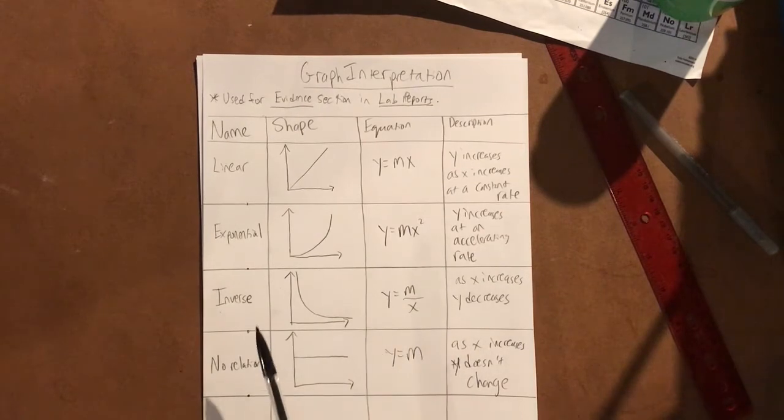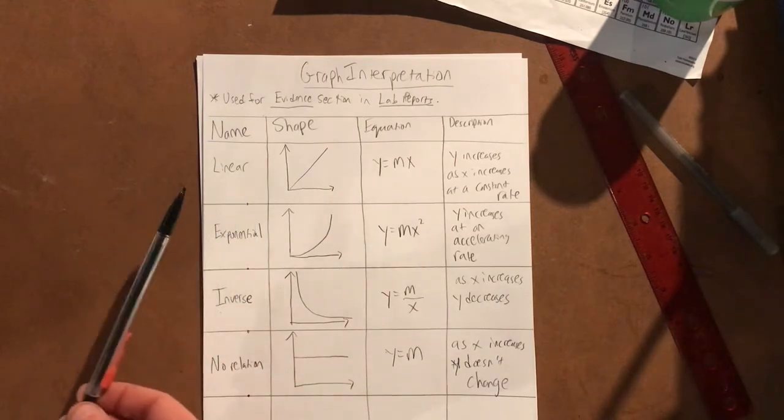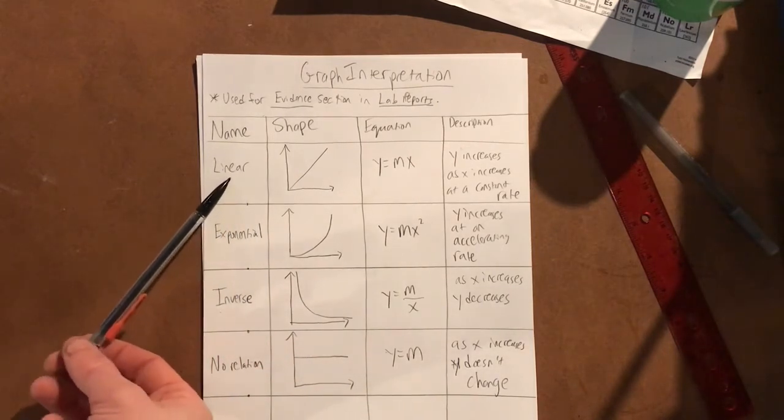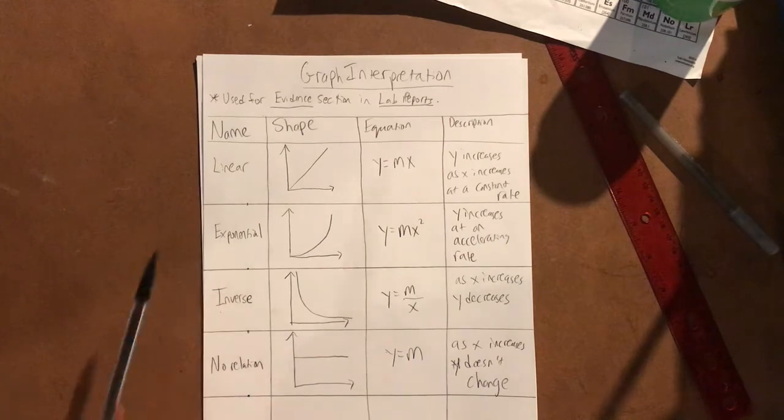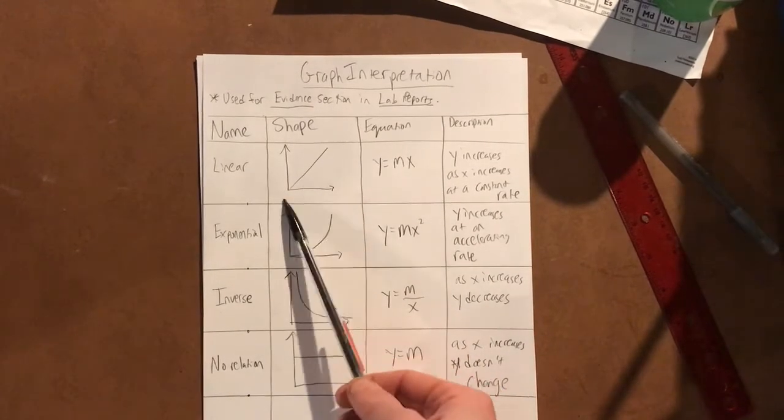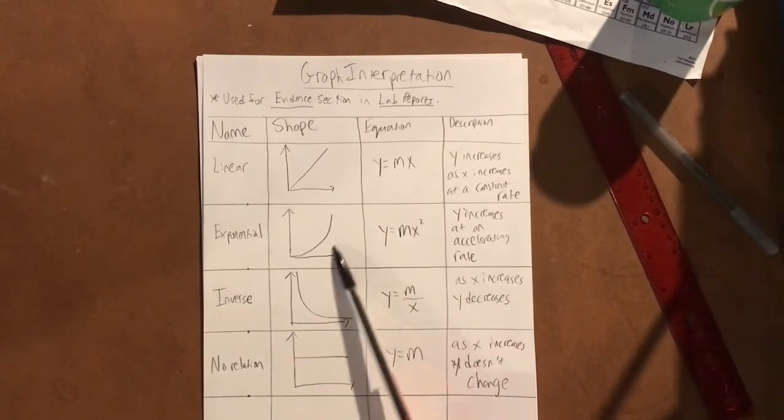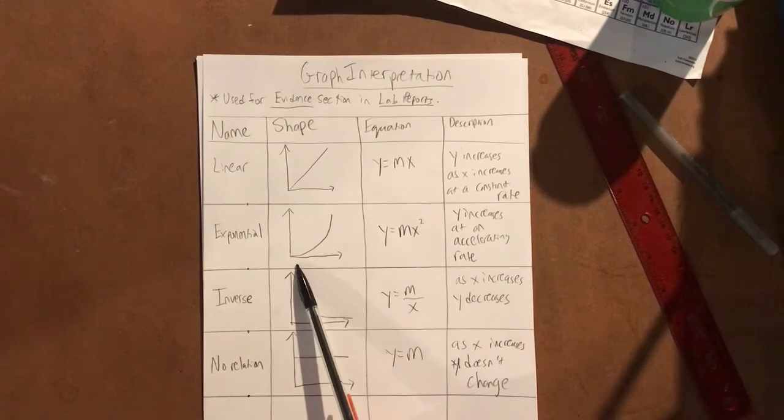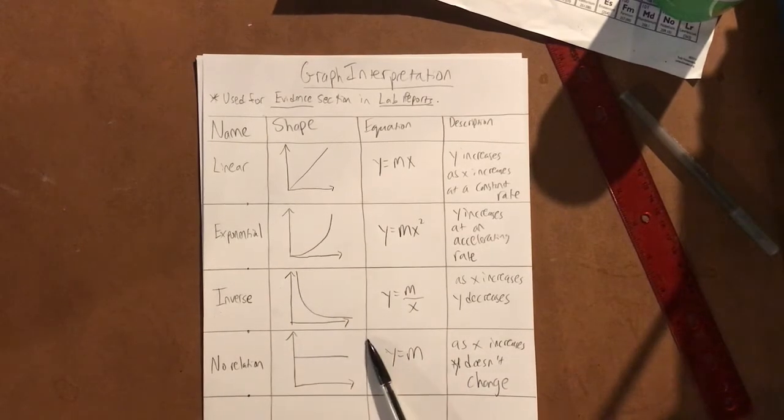After you've paused, there's four kinds of graphs: there's a linear graph, an exponential graph, an inverse, and a no relation graph. When you make a graph on Excel, it's either going to look like a straight line, a curving up line, a sort of U line like this, or a flat line that's not going up or down.